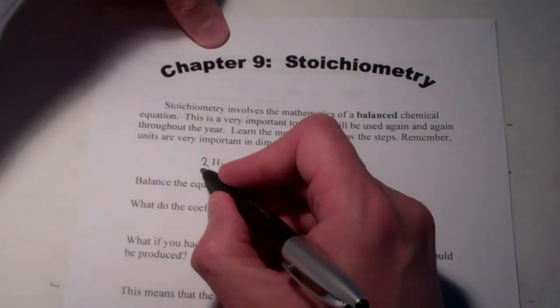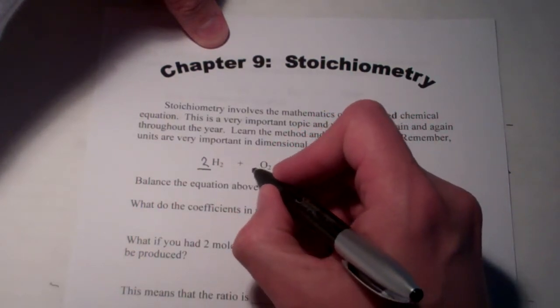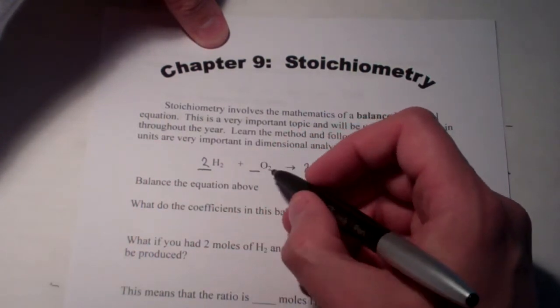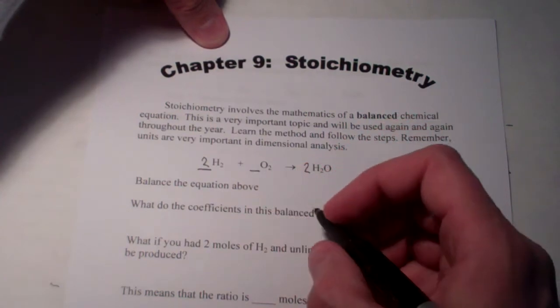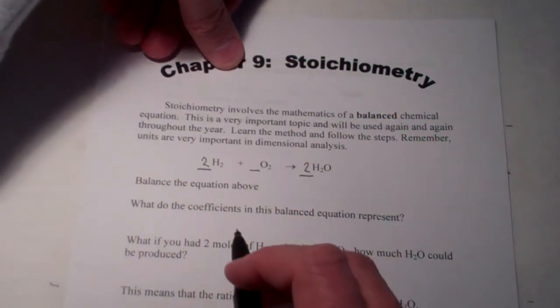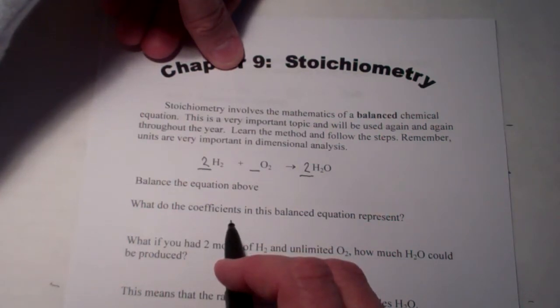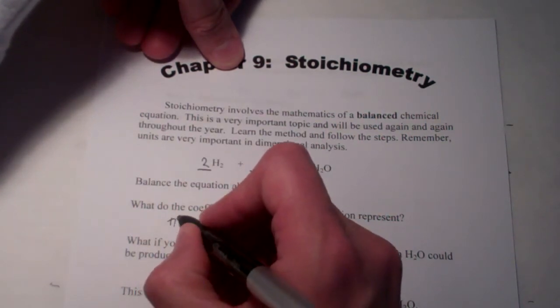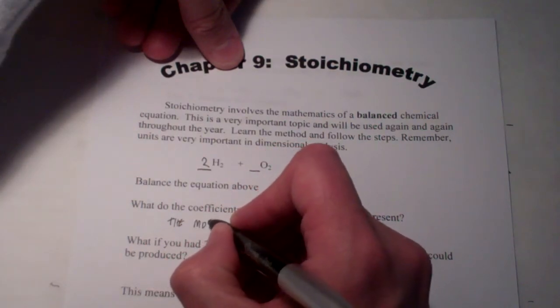Now, what we have are coefficients. The coefficient 2 is here. It's not written, and if nothing's written there, it's understood that the coefficient's 1. We have the coefficient 2 on the product side of the equation. The coefficients in the balanced equation represent the mole ratio.